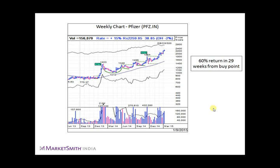Let's have a look at an example of cup with handle base. This is the weekly chart of Pfizer. You can see the stock forming a cup and handle base. If bought correctly on the ideal buy point, this could have given you a gain of 60% in 29 weeks.